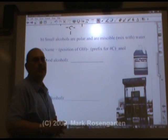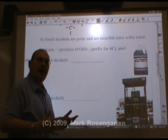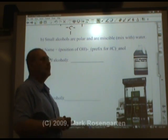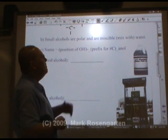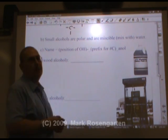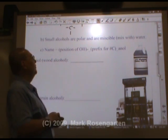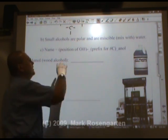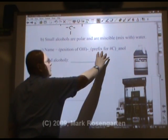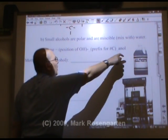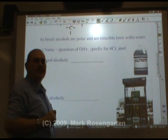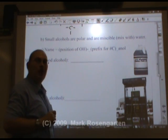Here are some properties of compounds that are alcohols. First of all, small alcohols are polar and they tend to be miscible — able to mix with water. The name of the alcohol is simply the prefix for the number of carbons and -ol, with a number in front to indicate where the OH is on the carbon chain.